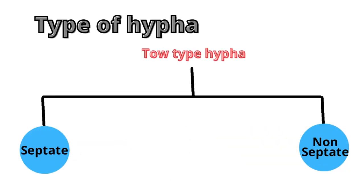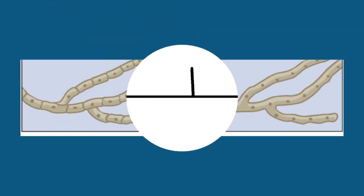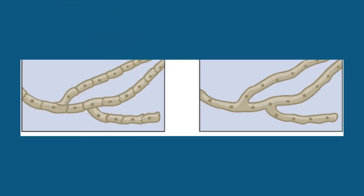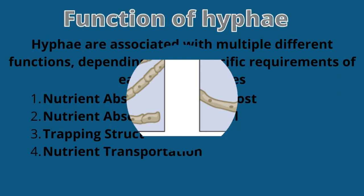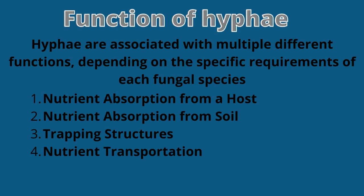There are two main types of hyphae: septate or non-septate. Septate hyphae have walls that separate individual cells, and are termed septate because they form structures known as septa between the cells. Non-septate, or coenocytic hyphae, are one long continuous cell without walls, lacking septa and therefore tending to be elongated cells without any divisions.